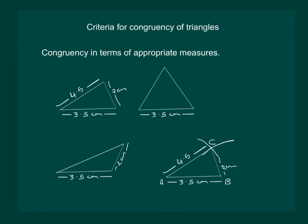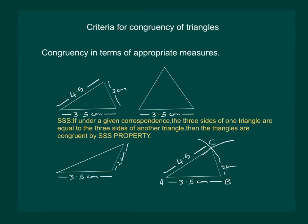So we can say that if length of three sides of a triangle are known, then we can draw a congruent triangle to it. And hence the SSS property states: if under a given correspondence, the three sides of one triangle are equal to the three sides of another triangle, then the triangles are congruent by SSS property.